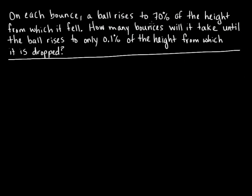On each bounce, a ball rises to 70% of the height from which it fell. How many bounces will it take until the ball rises to only 0.1% of the height from which it was originally dropped? We want to keep in mind that we're looking at an exponential relationship. We should be able to write the equation using something of this form, where A is the initial value and B is the rate of growth or rate of decay.